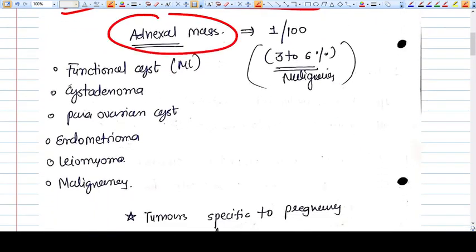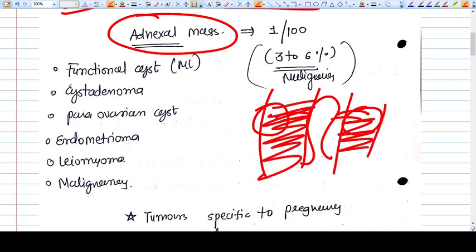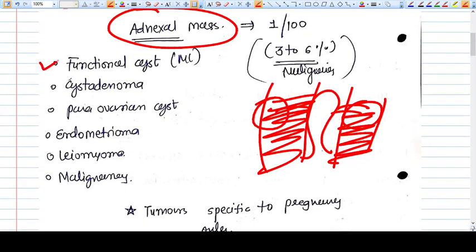When we talk about adnexial mass, it is a different thing from ovarian tumor and ovarian cancer. Adnexa means adjacent to the uterus. When you have a uterus here and in the adnexa you have fallopian tube, broad ligament, and ovary on both sides, so adnexial mass can be anything.